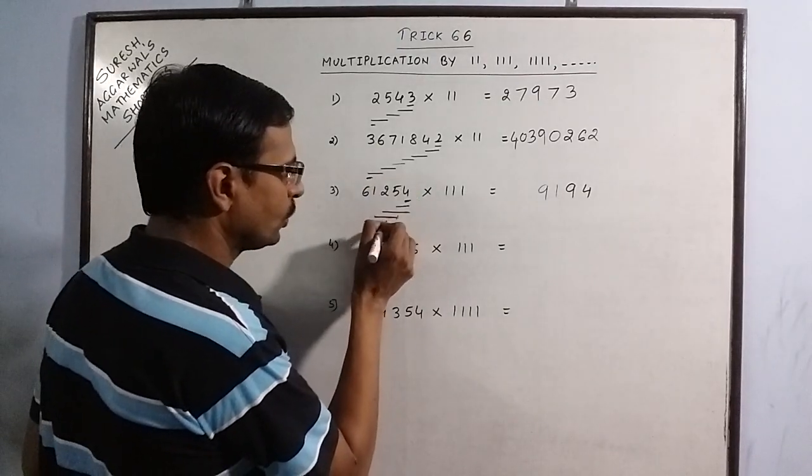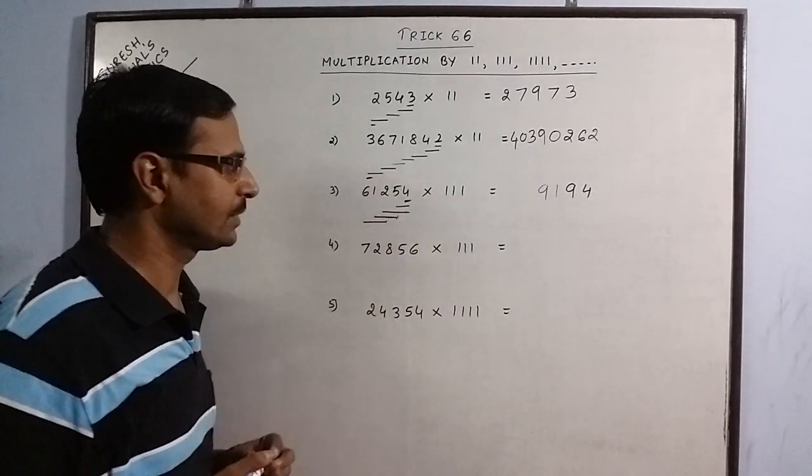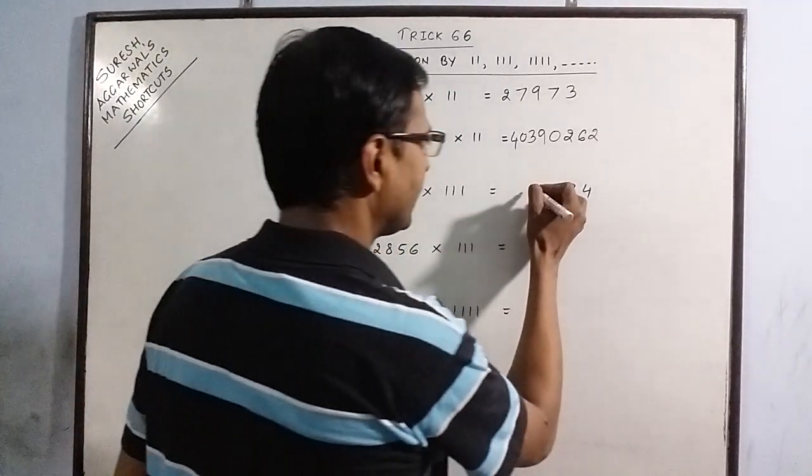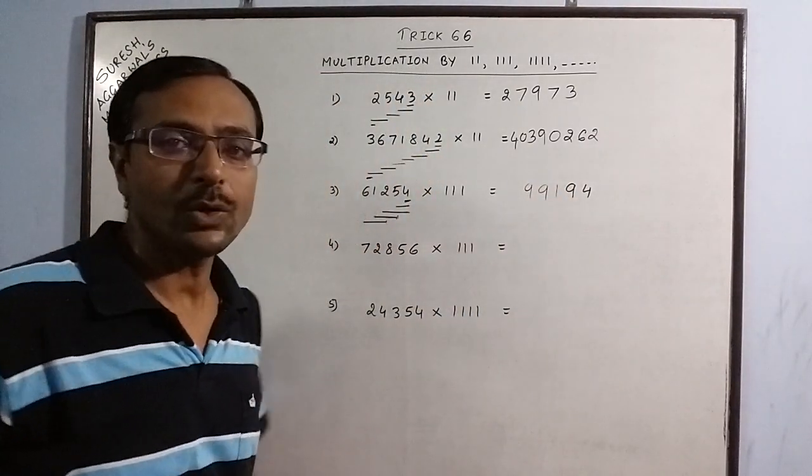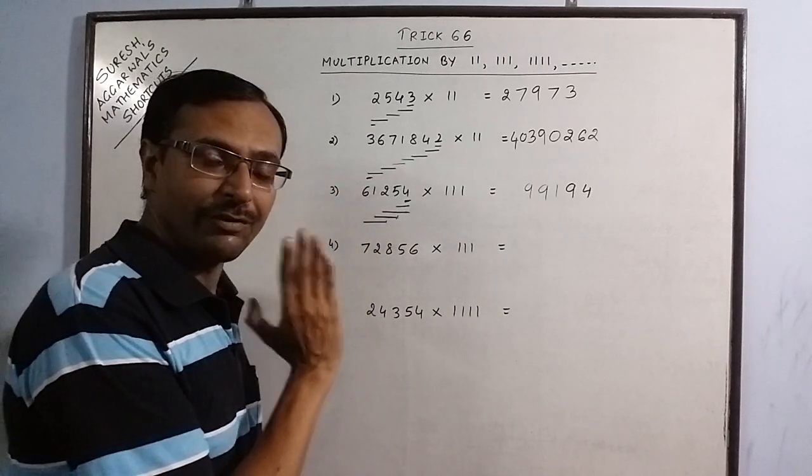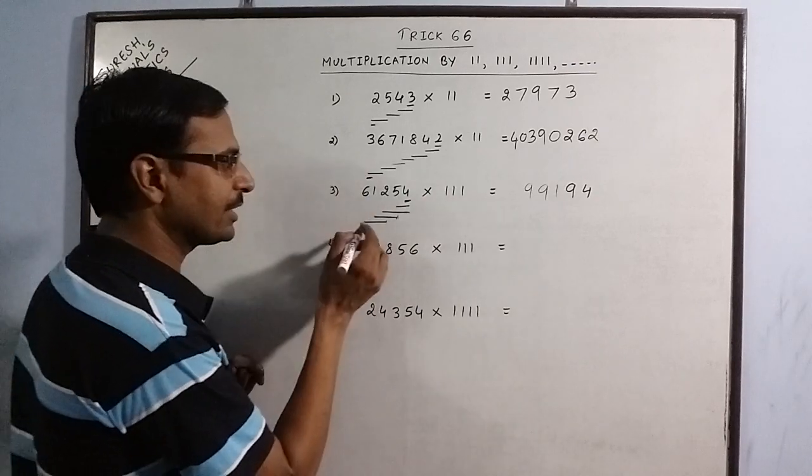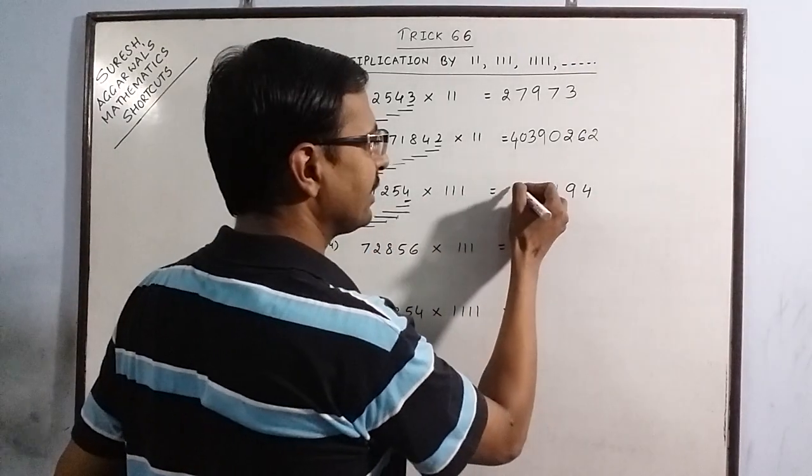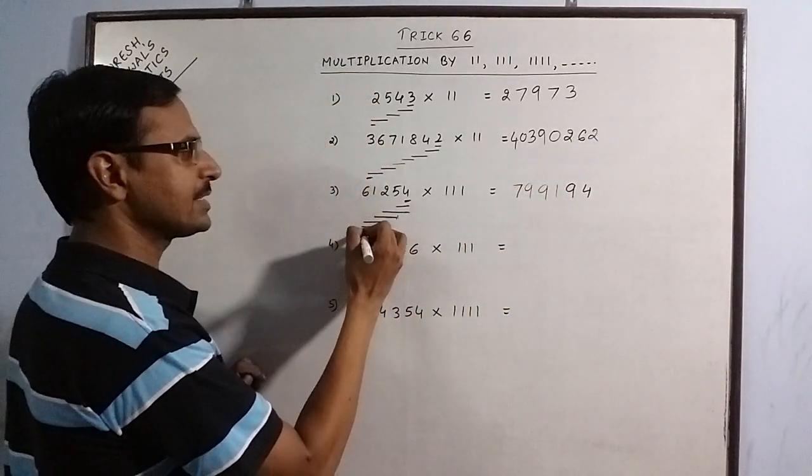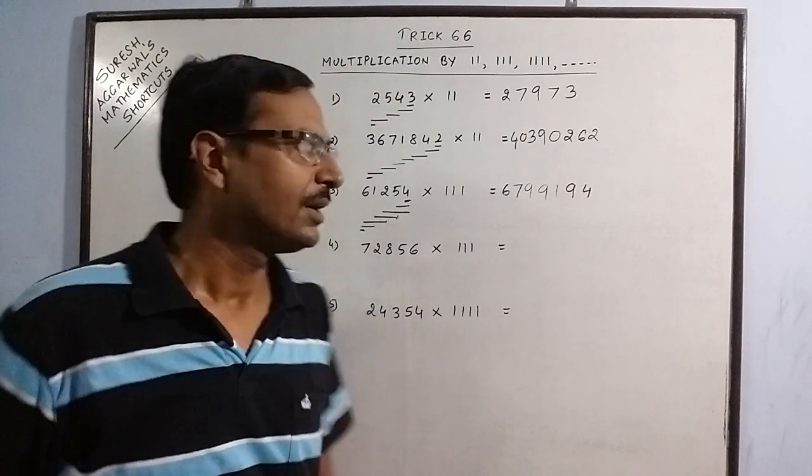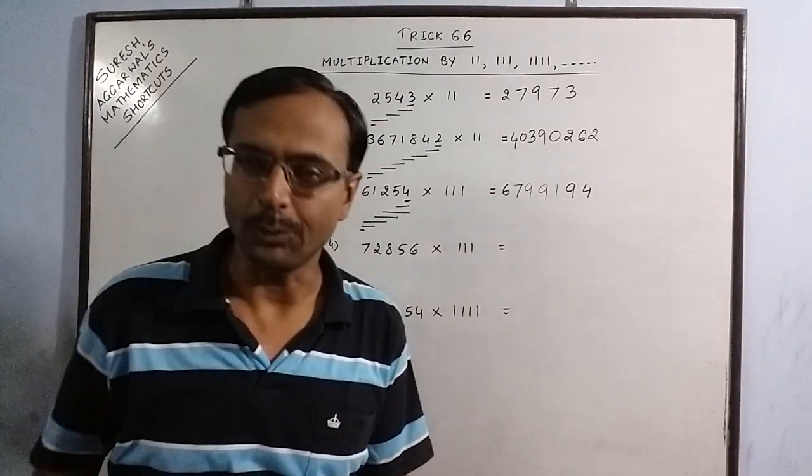Move 1 place further. Start from 2, move up to 6. 2 plus 1, 3 plus 6, 9. Get another 9. And now since we cannot move 1 further, we will not have a triplet. Now move 1 further but we will have only 2 digits now. 1 and 6, 7 and finally the single digit 6. So your answer is 6, 7, double 9, 1, 9, 4.